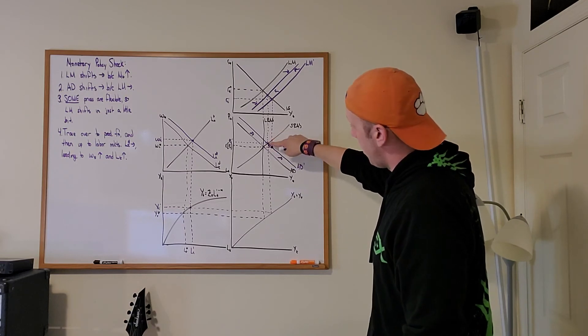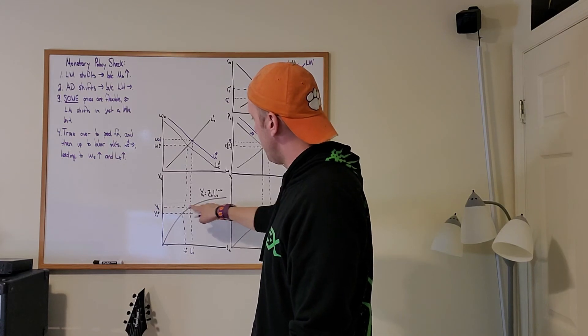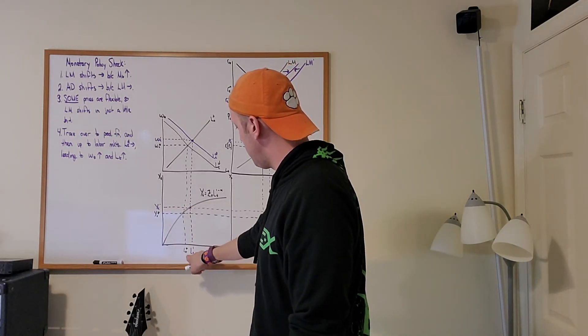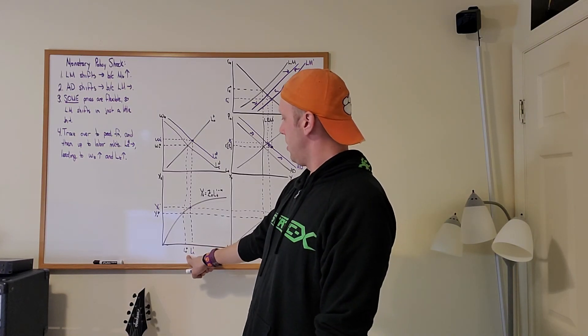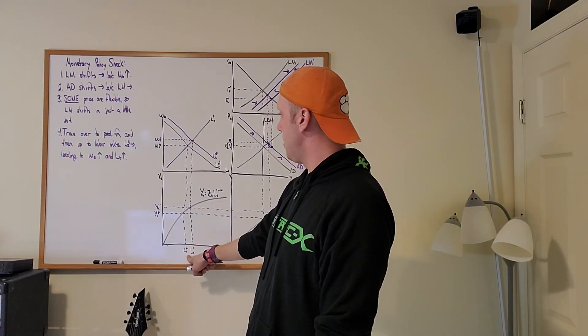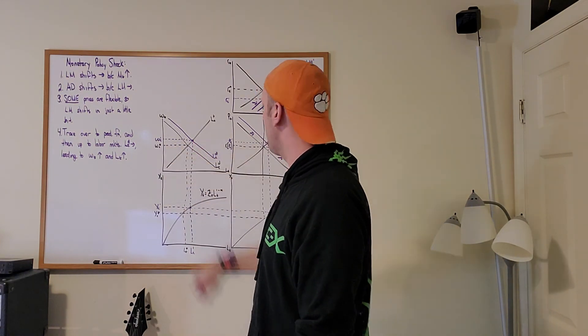Now, this is the easy part. All we do is just trace the dotted line down and over to our production function. We're going to see output goes up. Because output goes up, they're going to need more workers in order to fill that demand for output, which means there's going to be an increase in labor demand leading to higher wages.